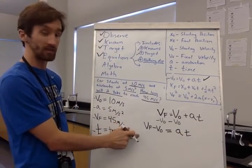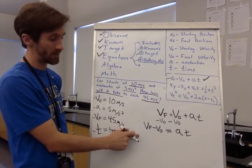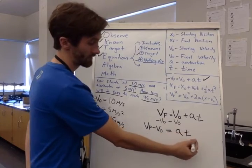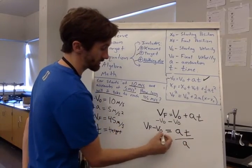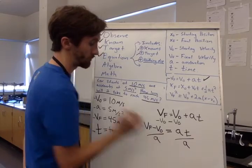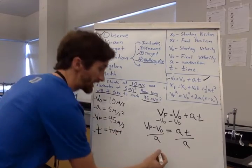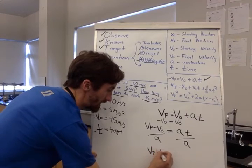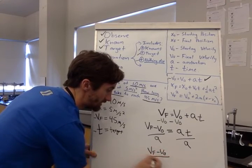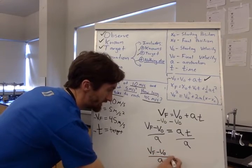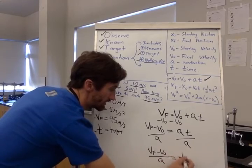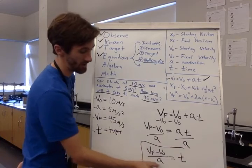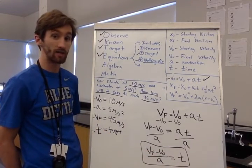final velocity minus initial velocity equals acceleration times time. So I know that this is my first step. Now the next thing that I have to do to get T by itself is divide acceleration by both sides. And then I have final velocity minus initial velocity divided by acceleration equals time. And so I have time equal to something. That's what I needed.